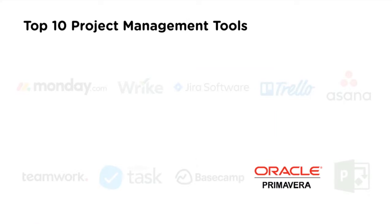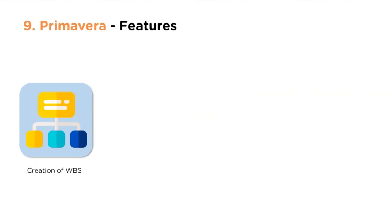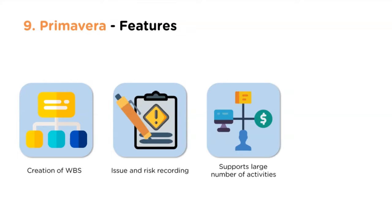Companies using Basecamp include Thoughtbot, Harvest, and Groupon. Oracle Primavera was released in 1983 and acquired by Oracle Corporation in 2008. Primavera helps project managers handle a vast number of tasks using unlimited resources and target plans. The website is www.primavera.com, used by over 7,143 companies. Features include creation of WBS (Work Breakdown Structure), issues and risk recording, support for large numbers of activities, and easy collaboration.